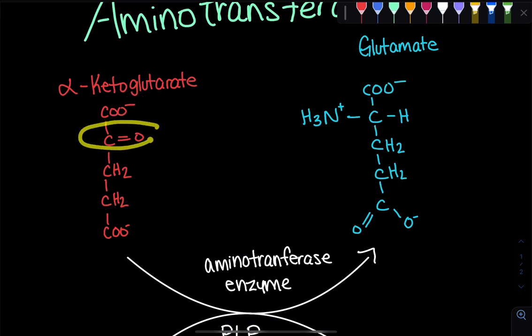So they differ over here at this alpha-carbon. At the alpha-carbon of alpha-ketoglutarate, we have a carbonyl, but at glutamate, we have a carbon with a nitrogen group bound and a hydrogen.